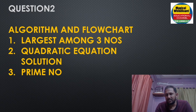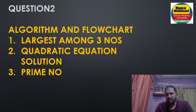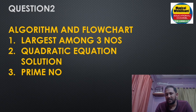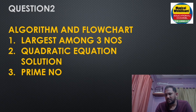In this topic, we can see the flowchart in the algorithm. There are two examples: a question about three numbers in a flowchart/algorithm, a quadratic equation solution, a prime number, and similarly the factorial series. These cover question number two.